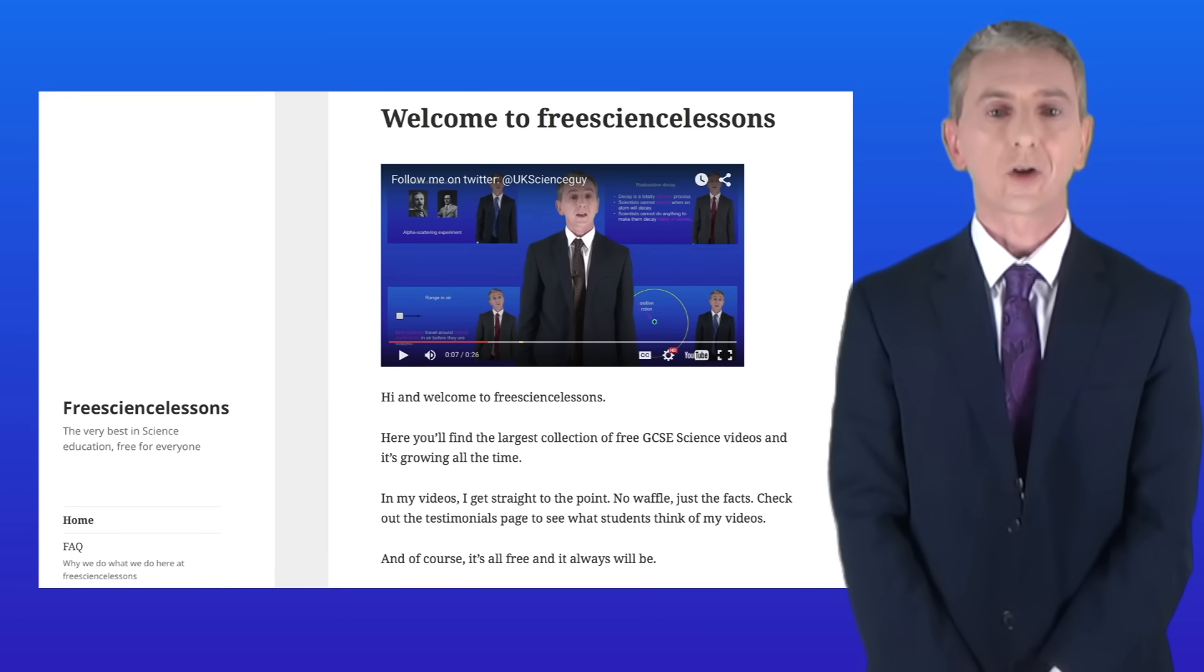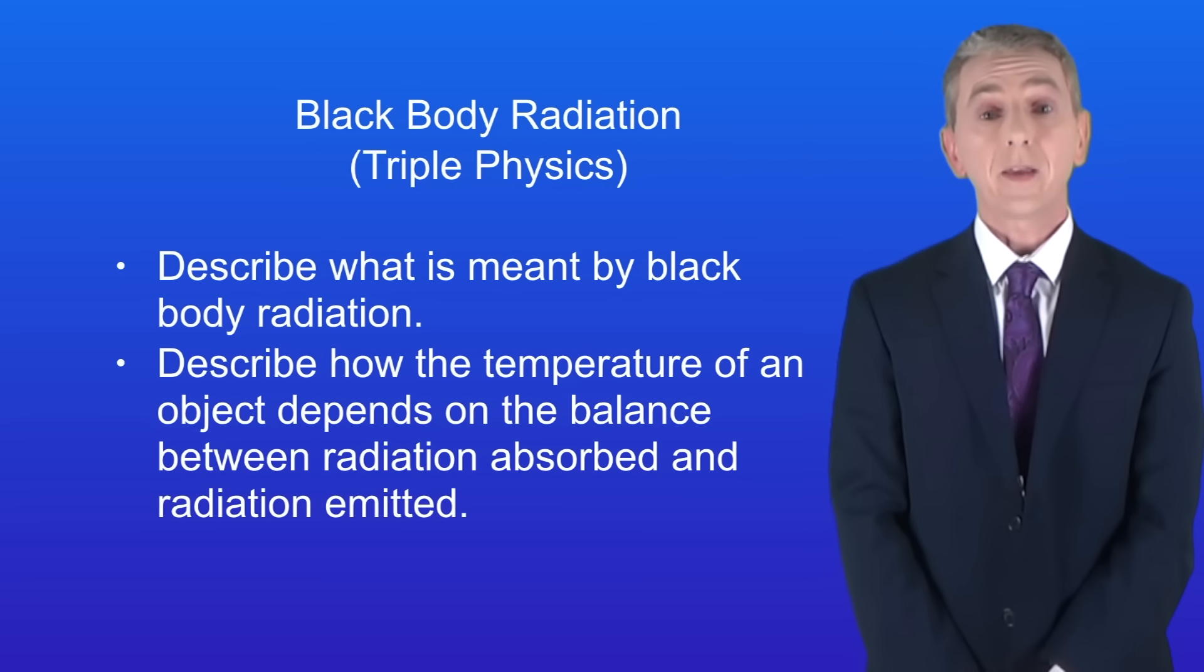Hi and welcome back to freesciencelessons.co.uk. By the end of this video you should be able to describe what's meant by black body radiation, and then describe how the temperature of an object depends on the balance between radiation absorbed and radiation emitted. This is for triple physics students only.